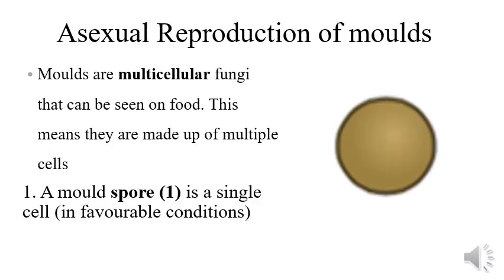I'm going to begin talking about the asexual reproduction of molds. This is called asexual because only one singular spore is involved. Asexual always means when something reproduces on its own without a partner. Asexual reproduction of molds begins with one single spore cell that lands on favourable conditions. Because we're in Home Economics, we are going to talk about it landing on food.